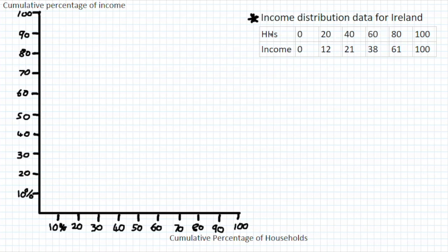The Lorenz curve shows the relationship between both of them, and what we have on the right-hand side is the income distribution data for Ireland, looking at households and the income level of different distributions. To construct the Lorenz curve, the percentage of households goes up in 10% increments — deciles — from 0 up to 100%. We also have cumulative percentage of income on the y-axis, also in deciles.